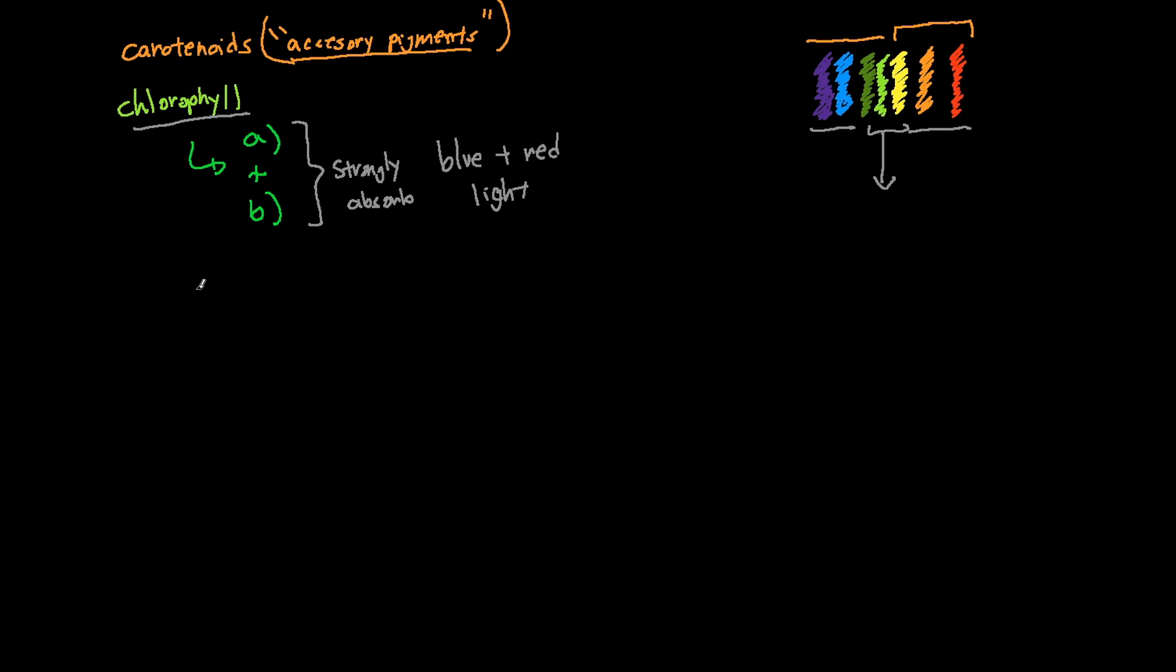It is interesting because carotenoids absorb wavelengths that chlorophyll A and chlorophyll B cannot, which enhances the range of wavelengths that can be absorbed in photosynthesis. If I have a leaf coming from a plant, the green pigments we see are coming from the chlorophyll A and B, whereas sometimes in the fall, we are seeing some yellowish coloring inside our leaves coming from the carotenoids.